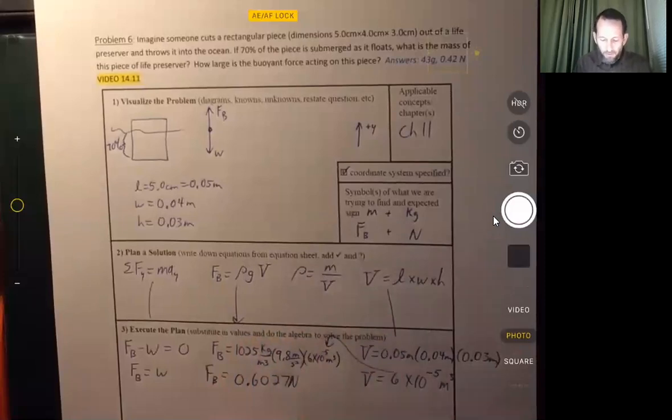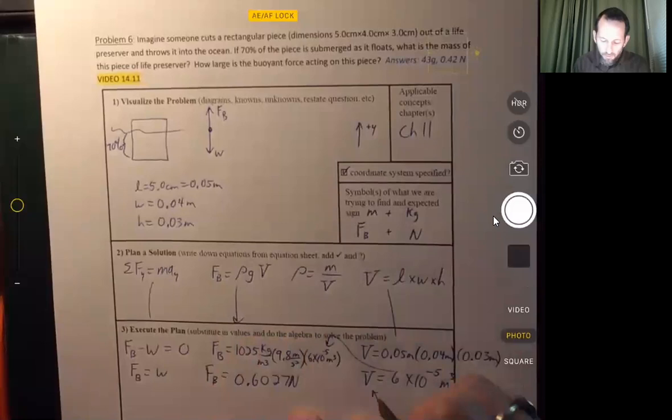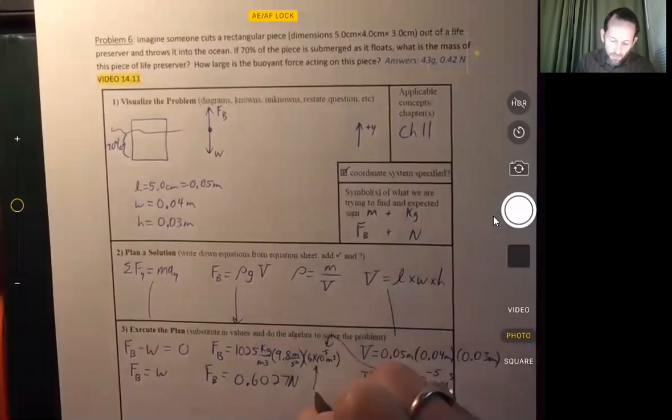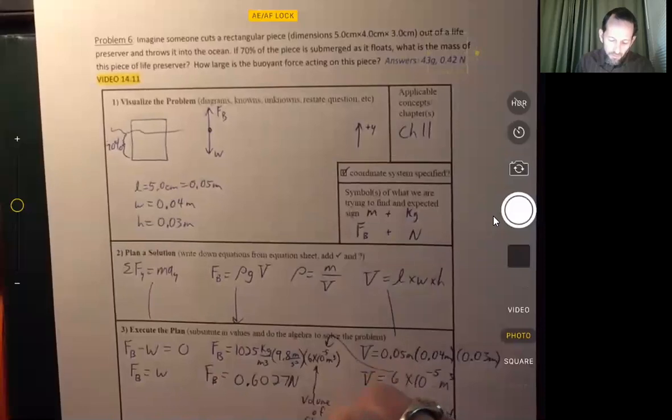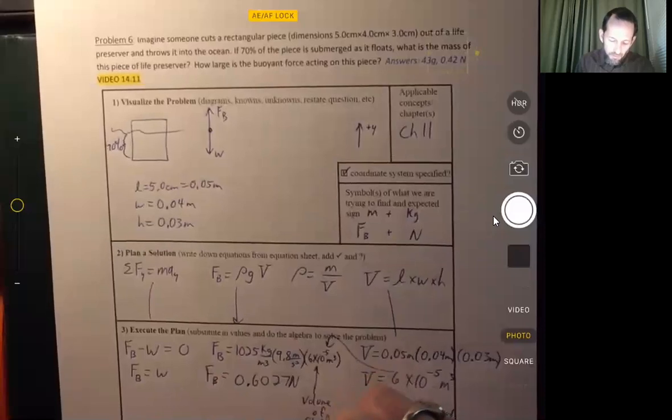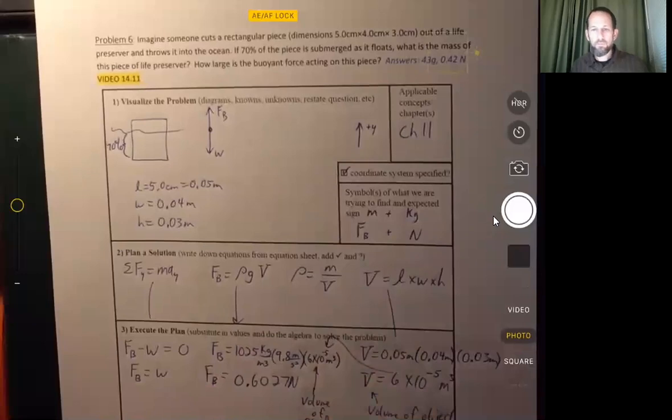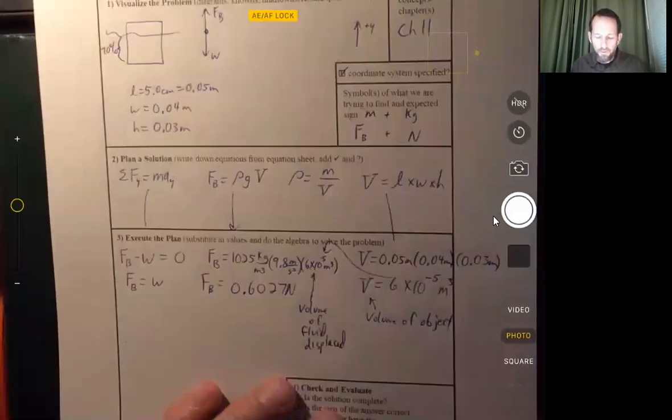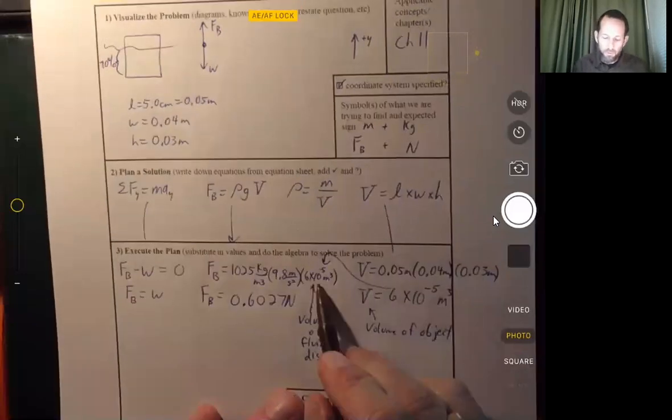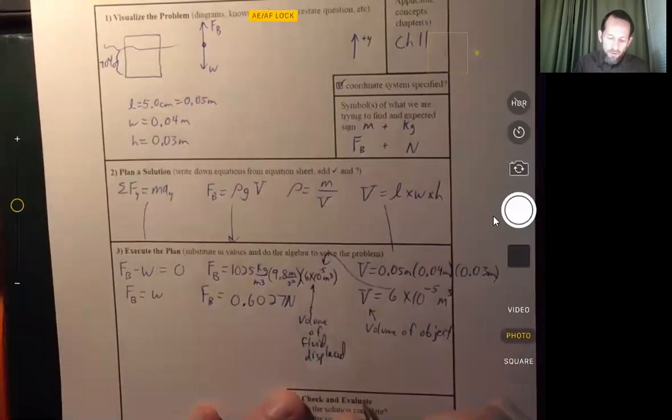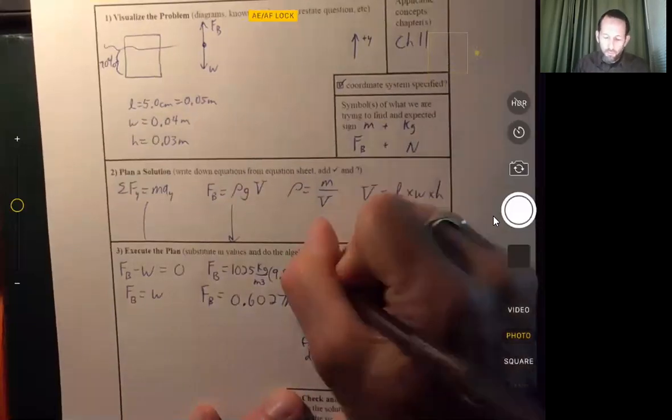However, if we look back and we say, wait a minute, what volume did we use? This is the volume of the object, but this volume is supposed to be the volume of fluid displaced. Okay, so if we're supposed to use the volume of fluid displaced, we need to modify that.